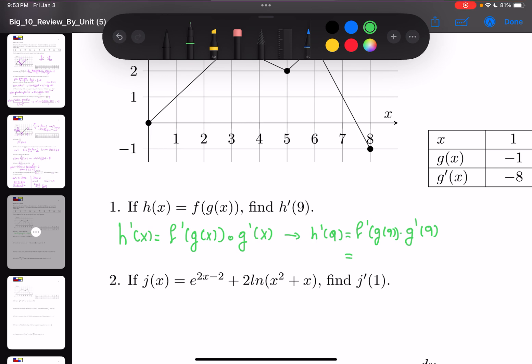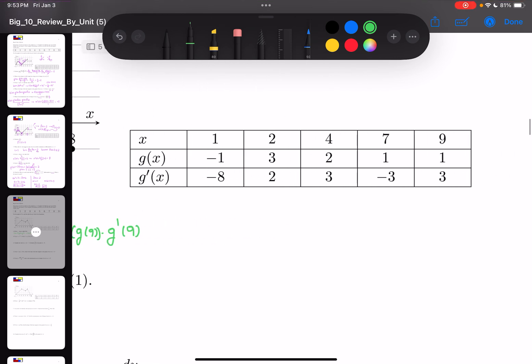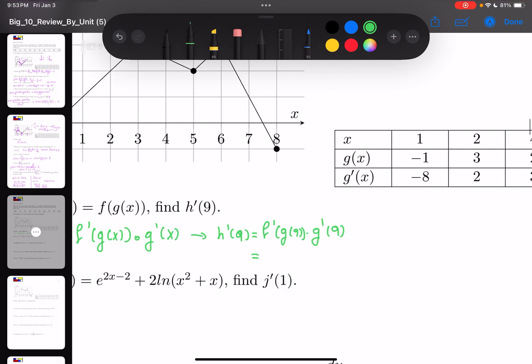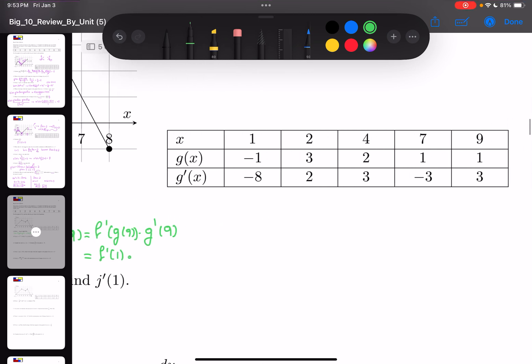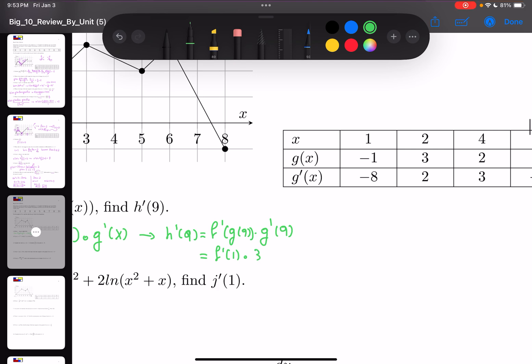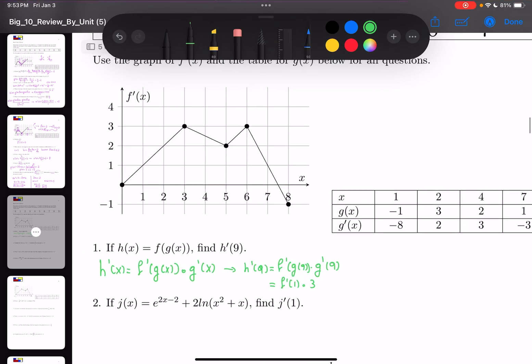So g(9) is 1, so f'(1), and g'(9) is equal to 3. According to the graph, because this is the graph of f'(x), f'(1) is 1.